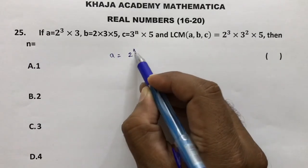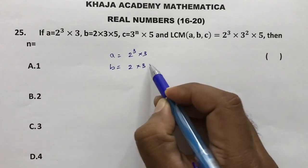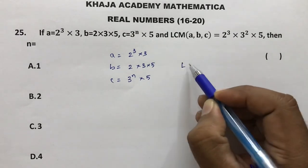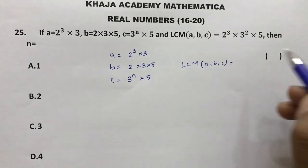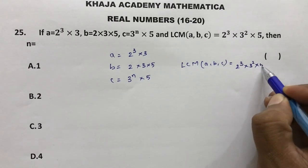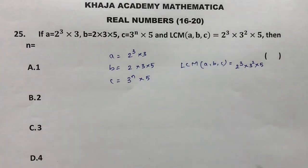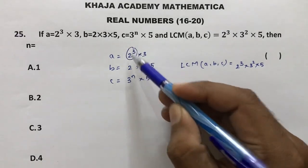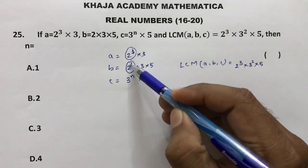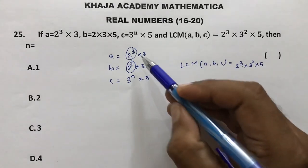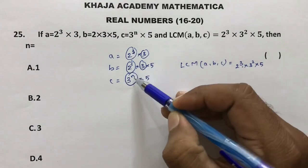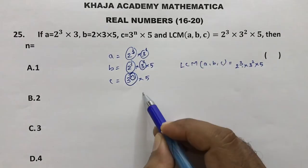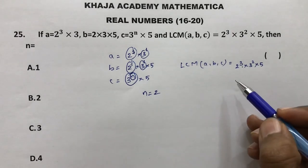Next question: prime factors of a = 2³ × 3, prime factors of b = 2 × 3 × 5, prime factors of c = 3ⁿ × 5. The LCM of a, b, c is given as 2³ × 3² × 5. For LCM, we take the highest power of each prime. For 2: highest is 2³. For 3: the LCM gives 3², so we need the highest power among 3¹, 3¹, and 3ⁿ to be 3². Therefore n = 2.